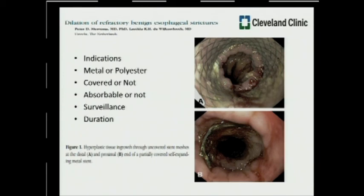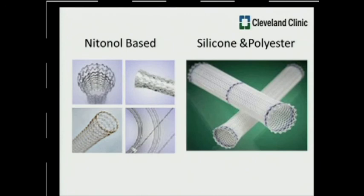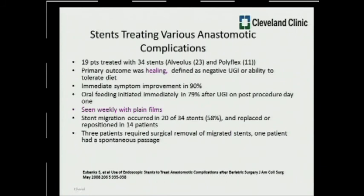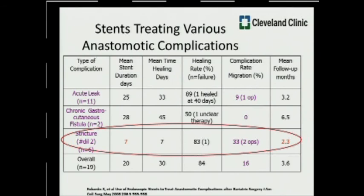Surveillance and duration are probably the two most important long-term considerations for stents. I typically recommend weekly plain films for patients with metallic stents placed. Most patients don't tolerate stents for very long, because mechanical dilation 24 hours a day, 7 days a week has very low tolerability — and this has been borne out in the literature. We have published similar results looking at management of anastomotic strictures and leaks using covered metal stents, polyester stents, and plastic stents. Overall success rate with stents is low in the majority of these patients.